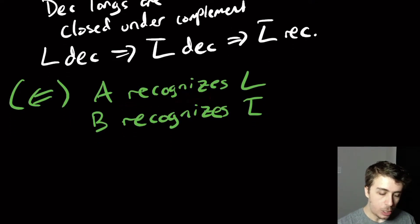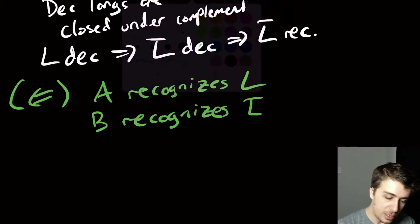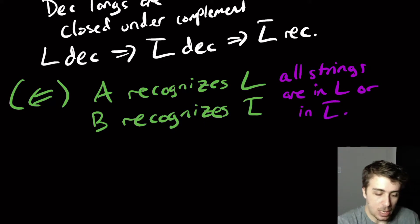So what do we do here? Well, the thing is, if I feed an input to either one of these guys, and I don't know whether it's in L or not, then I don't know whether these machines will run forever or not, because they're just recognizers. They might not halt on the strings that are not in their language, but they must halt on the strings that are in their language. And the key thing to note here is that all strings, every single string, are in L or in the complement. Because that's what complement means.